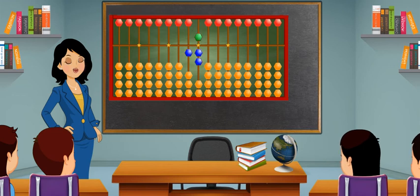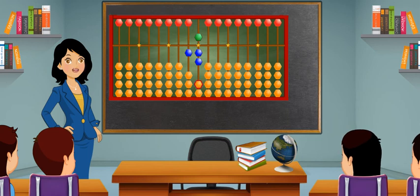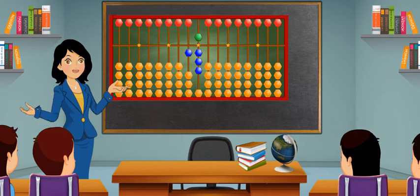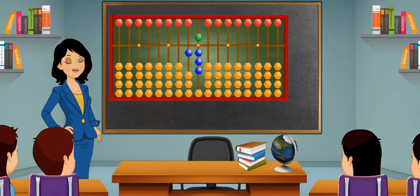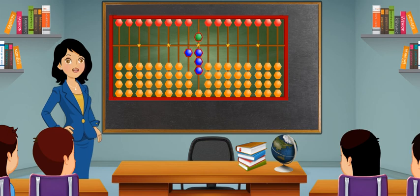This is number 17. To show number 18, one earthen bead on the tens place will remain the same and bring one more earthen bead upwards so that one heaven bead and three earthen beads touch the skyline to show eight on the ones place. This is number 18.